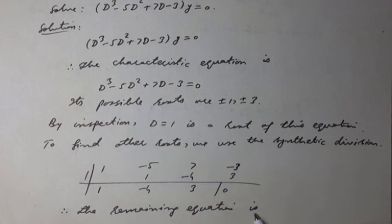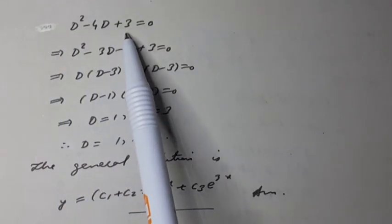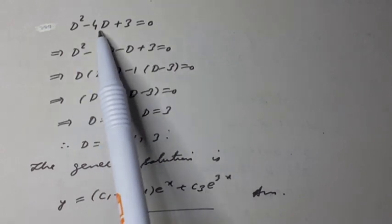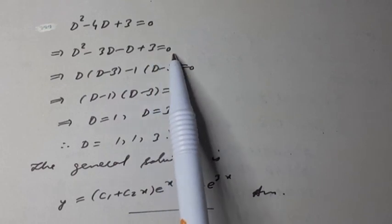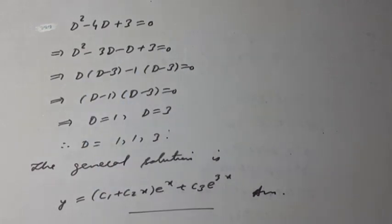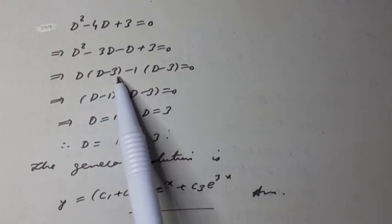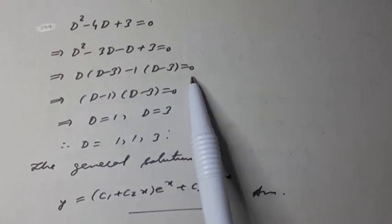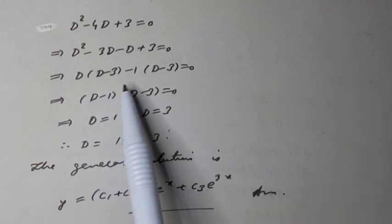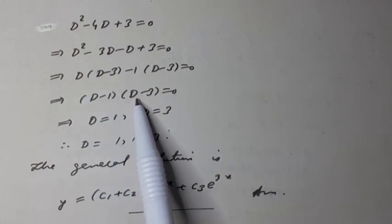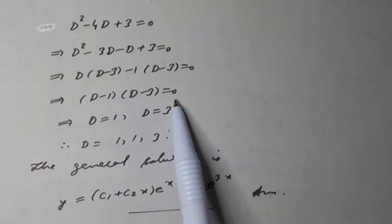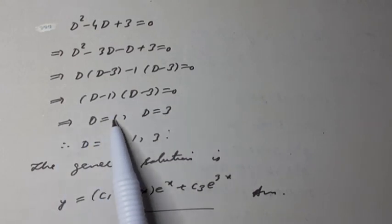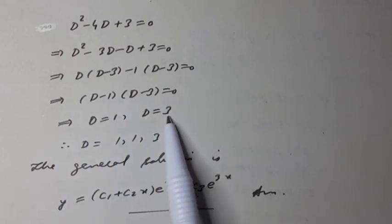Therefore, the remaining equation is D² minus 4D plus 3 equals 0. Its factorization is D² minus 3D minus D plus 3 equals 0, giving D(D minus 3) minus 1(D minus 3) equals 0, which can be written as (D minus 1)(D minus 3) equals 0. This implies D equals 1 or D equals 3.